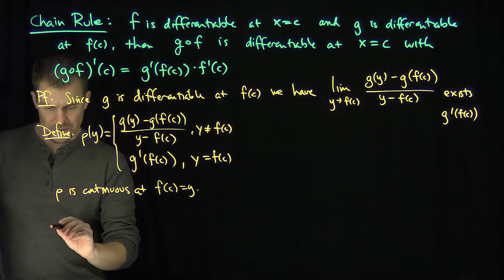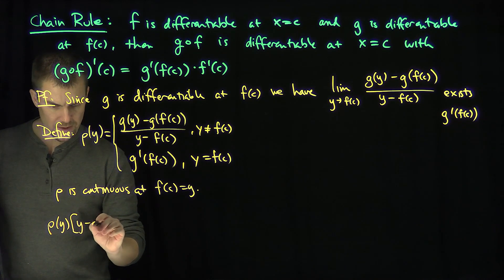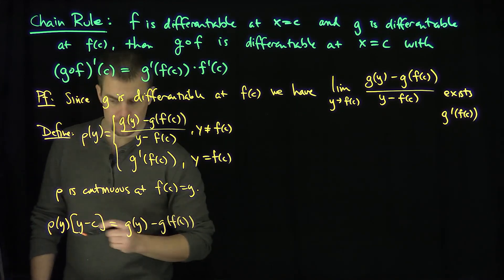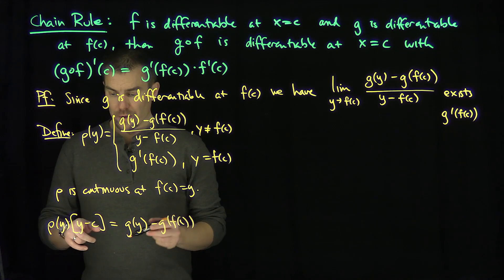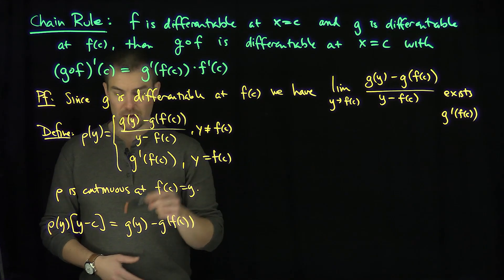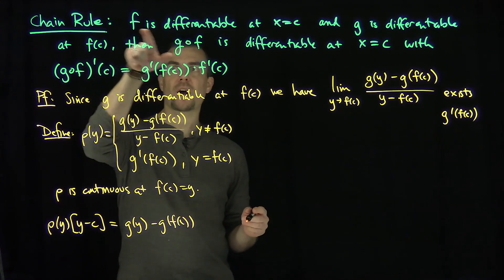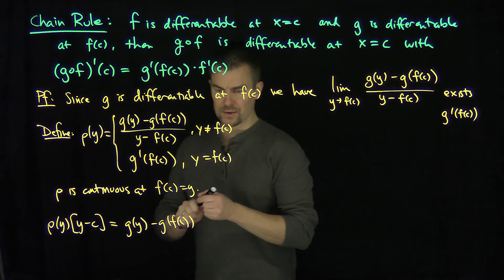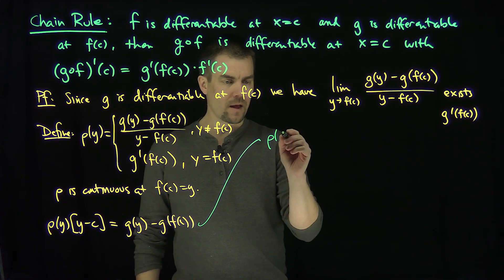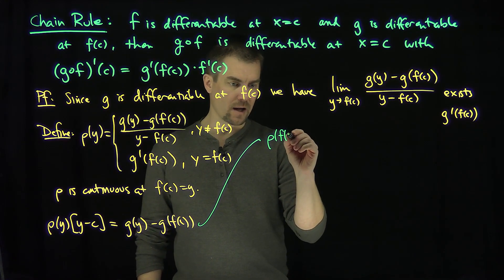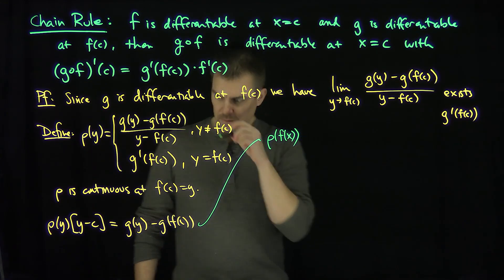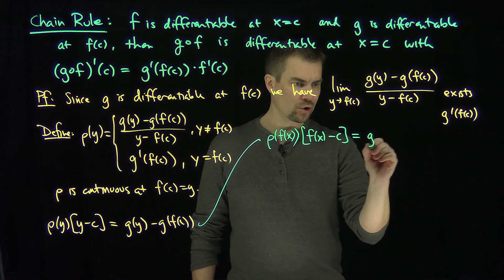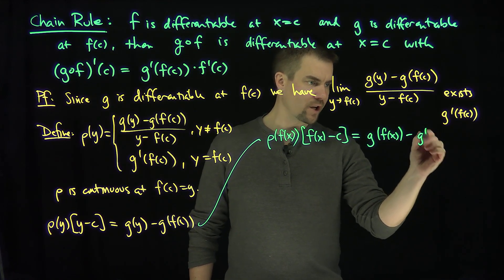Moreover, we can say that rho of y times y minus f of c is equal to g of y minus g of f of c. Since this is valid for any value of y, including f of c, I can plug in any value in the domain of f. I can replace y with f of x, for example. So this equation tells me that rho of f of x times f of x minus f of c equals g of f of x minus g of f of c.